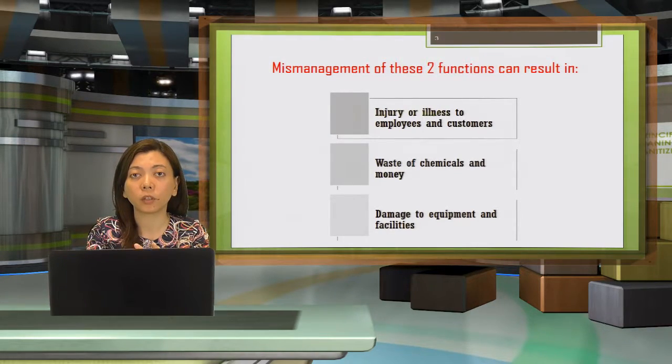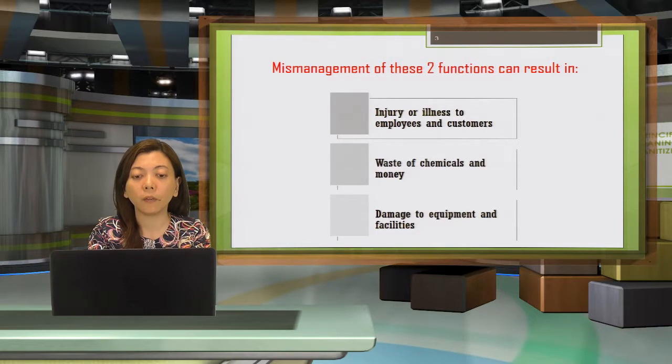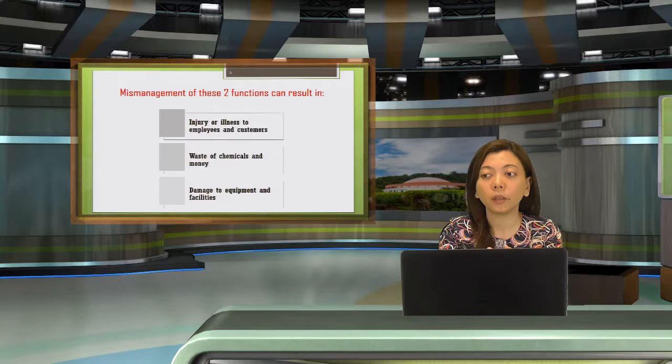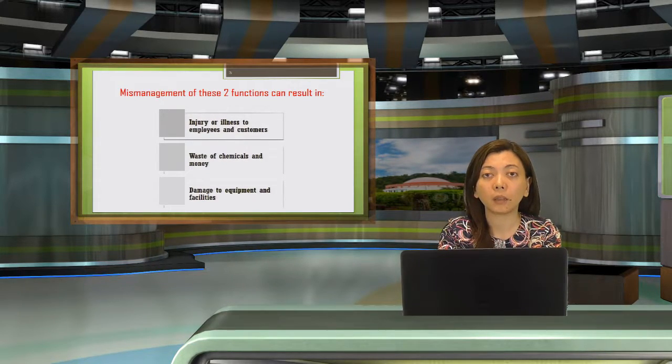So what happens if you do not manage these two functions properly? You can have injury or illness to employees and customers. This can happen when you do not provide your employees with personal protective equipment and they use chemicals or cleaning compounds that are harsh to skin. They might get skin irritation.